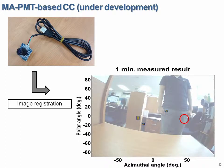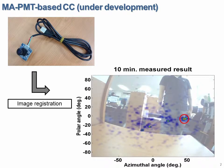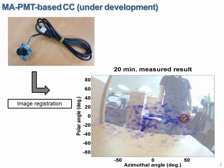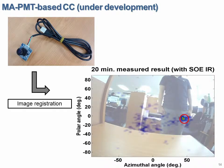To easily confirm the location of radiation sources, we attached a fisheye digital camera to our Compton imaging device. This shows the registered image with the back-projection algorithm, and we confirmed that the registered image is clearer with the statistical image reconstruction algorithm.